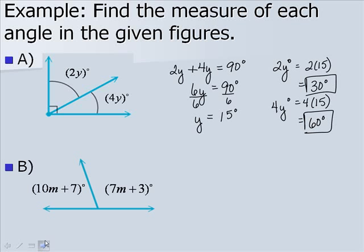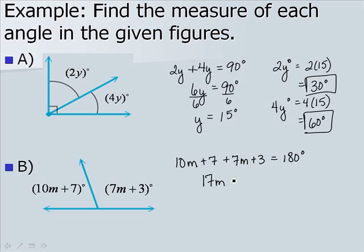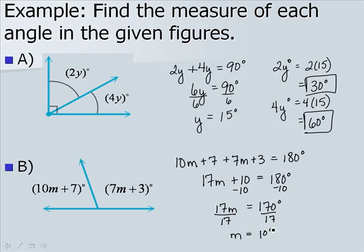Next, we have two angles that are supplementary — they add to 180 degrees. We add them up and set them equal to 180 degrees. When we combine like terms, we have 17m plus 10 equals 180 degrees. Solving: 17m equals 170 degrees, so m equals 10 degrees. We plug that into each equation to find the individual angles: we get 107 degrees and 73 degrees, and we see those add up to 180 degrees.